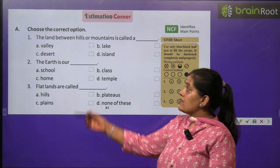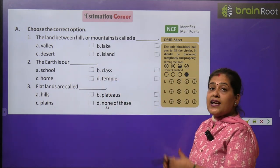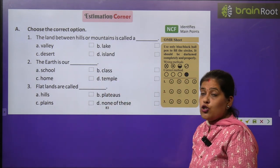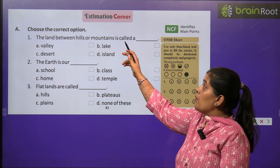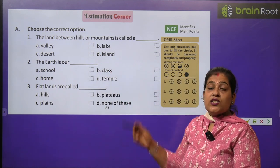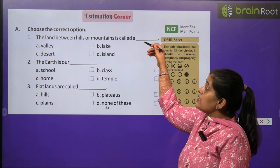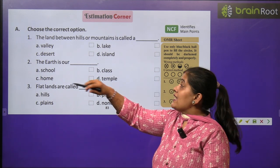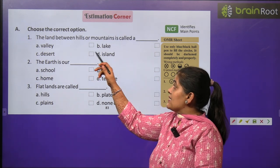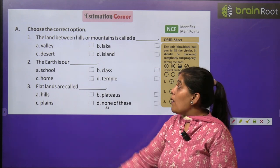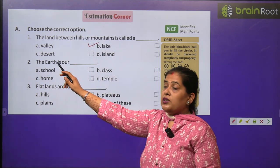Now we have to do some exercises. Exercise A: Choose the correct option — sahi option chuniye. The land between hills or mountains is called — woh zameen jo hills ya mountains ke beech mein hoti hai use kya kehte hain? Valley, lake, desert or island. The correct option is valley.